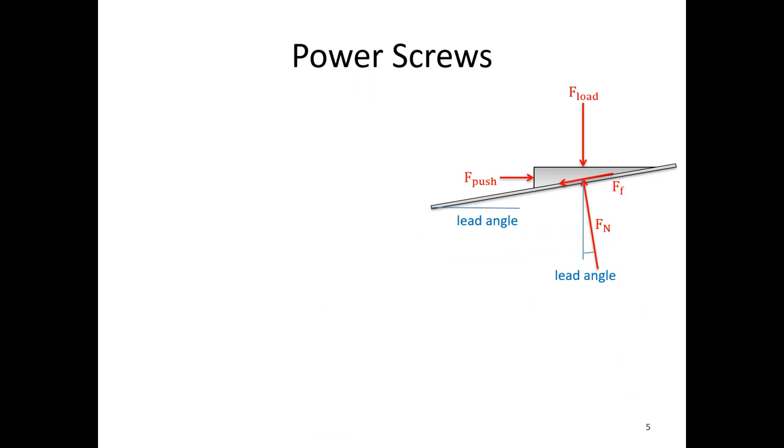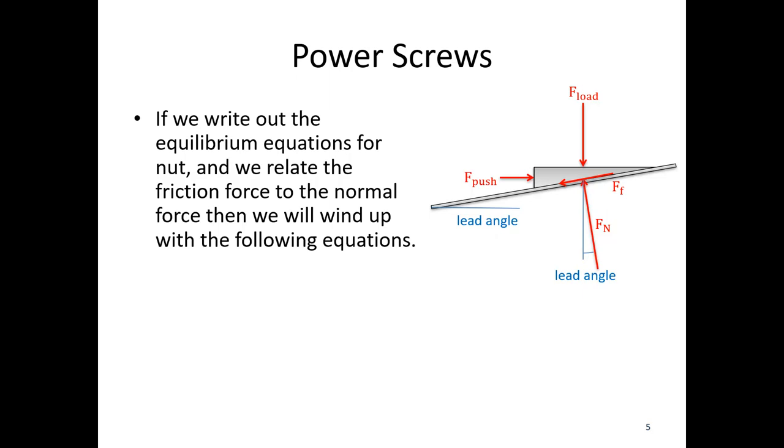Now we've got our free body diagram of the nut. So if we write out the equilibrium equations for this nut, and we relate the frictional force and the normal force, we'll wind up with the following equations. So sum of force in the x, we've got F push, minus Fn sine theta, minus mu k Fn cosine theta.